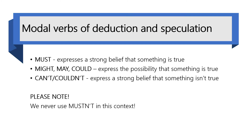Modal verbs of deduction and speculation are: must, might, may, could, can't, and couldn't. They don't have their usual meaning when we use them for this purpose. Must expresses a strong belief that something is true. Might, may, and could express the possibility that something is true. Can't and couldn't express a strong belief that something isn't true. Please note: we never use mustn't in this context.